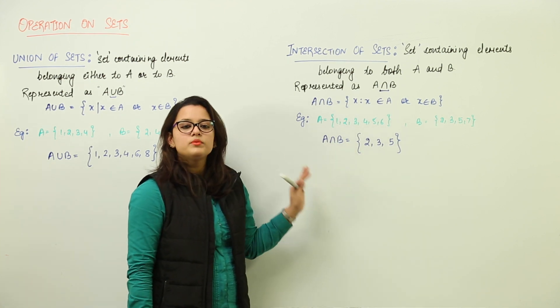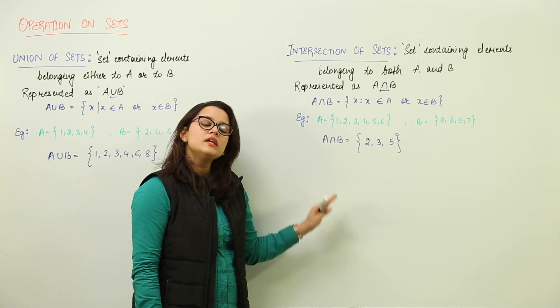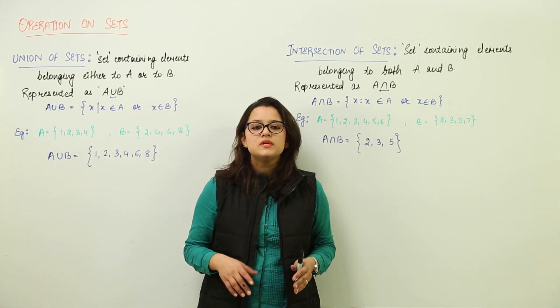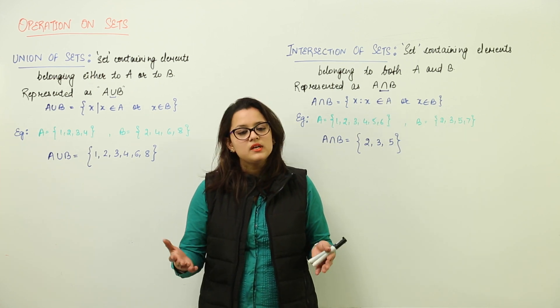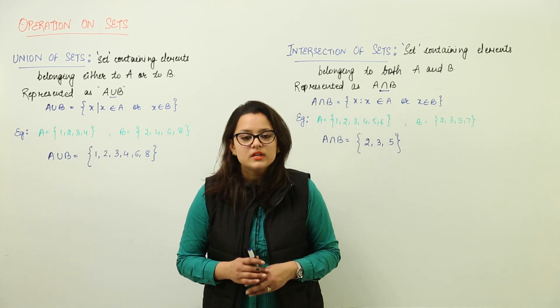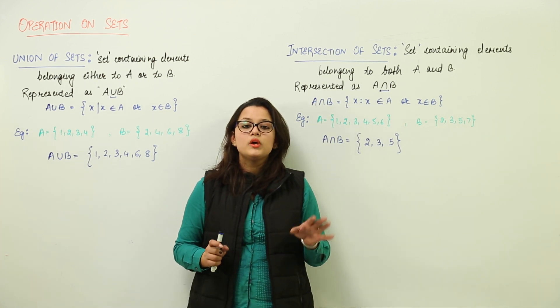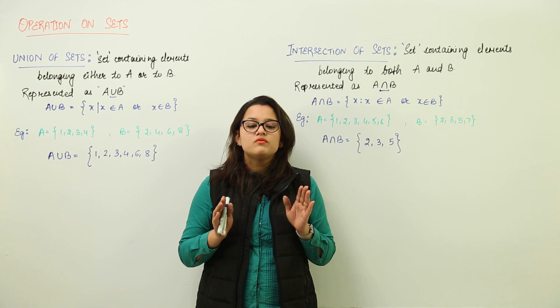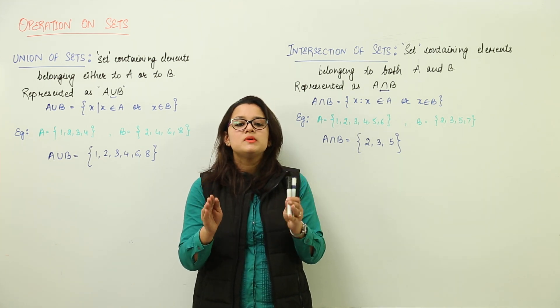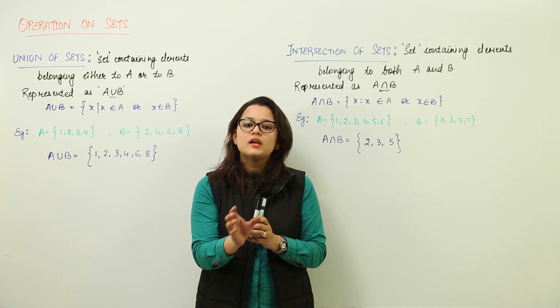I hope you are clear now with union and intersection. Union contains elements present in either A or B, and may contain elements present in both. Intersection contains only the elements common to both A and B.